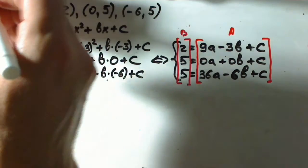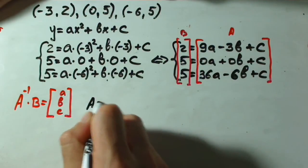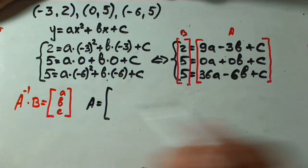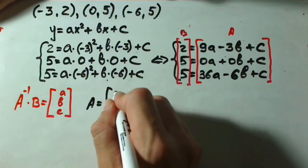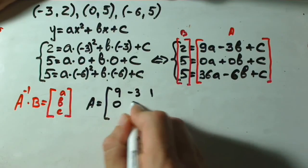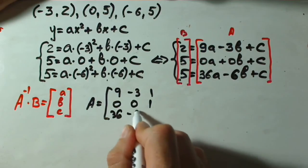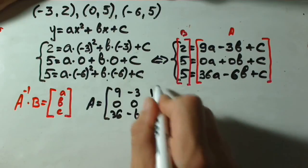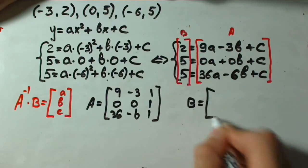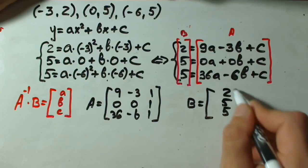Now, what is our matrix a? Our matrix a is coefficients right here. We have three variables, three equations. It means our matrix will be three by three. Just rewrite coefficients: 9, negative 3, 1, 0, 0, 1, 36, negative 6, 1. It's our matrix a. Our matrix b is just this column: 2, 5, 5.